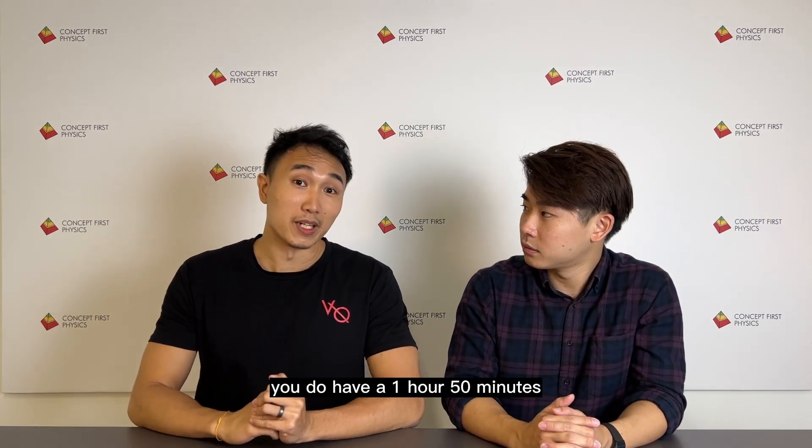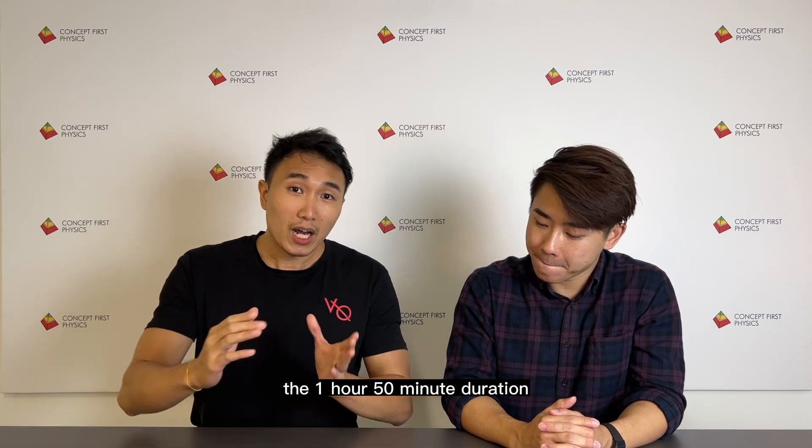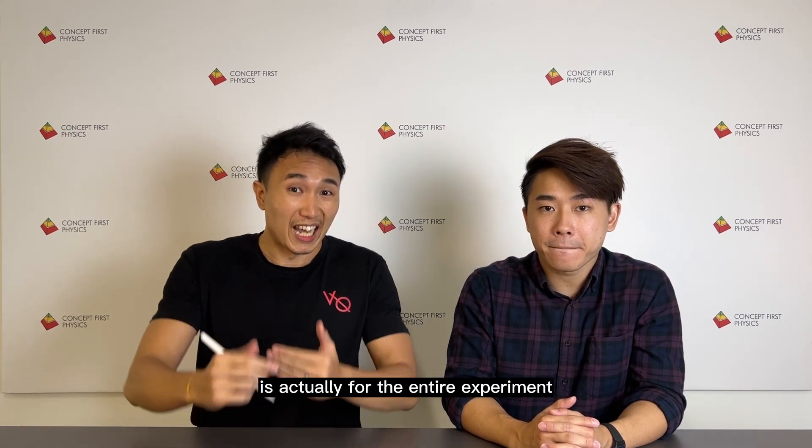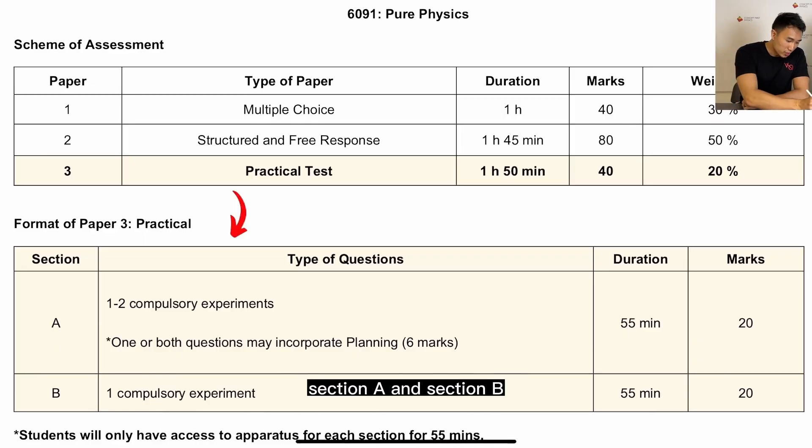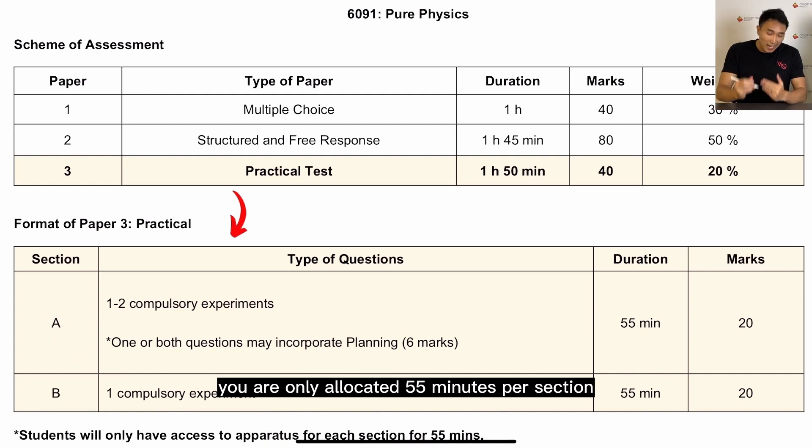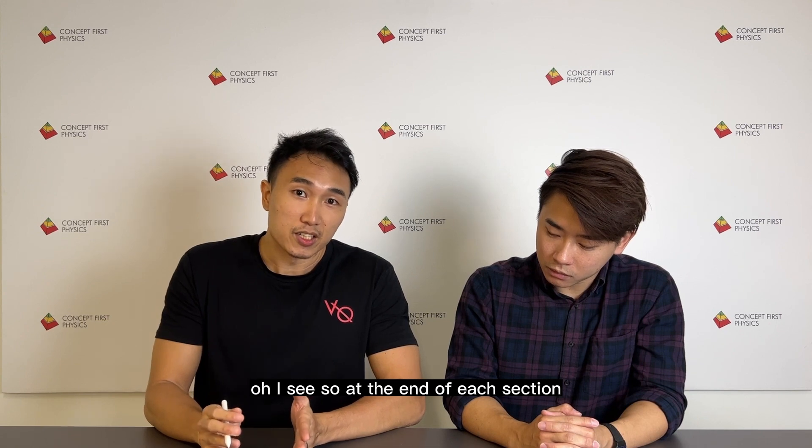You are actually right, Mr. Siang. We do have 1 hour 50 minutes. So for pure physics, the 1 hour 50 minutes duration is actually for the entire experiment which is split into two sections, Section A and Section B. So for each section you are only allocated 55 minutes per section.